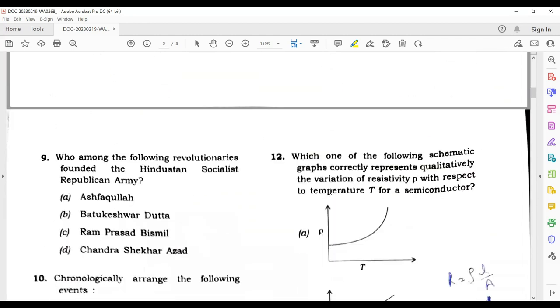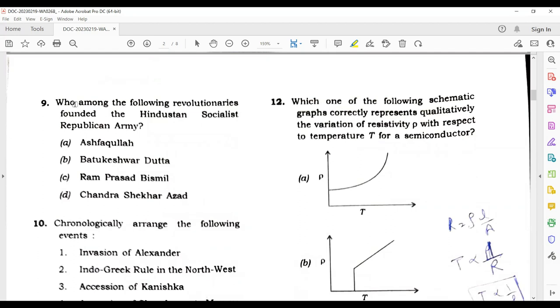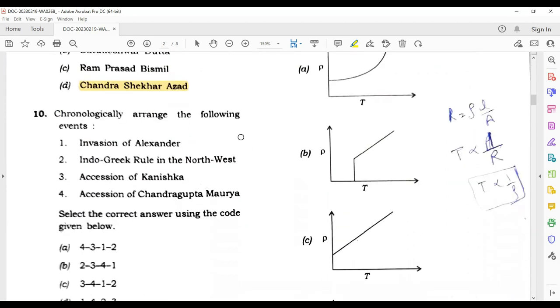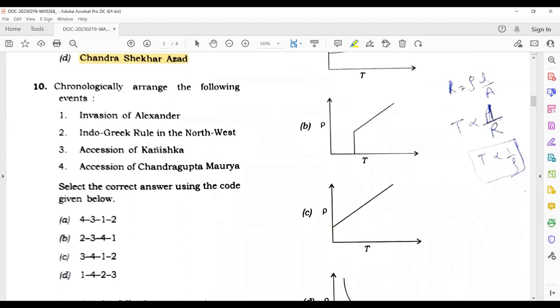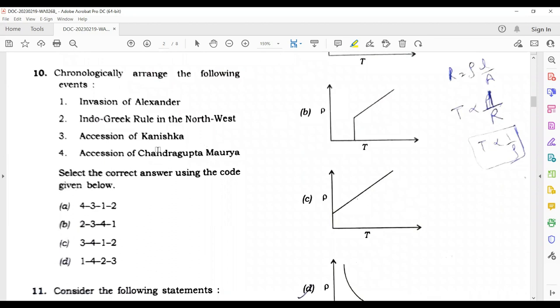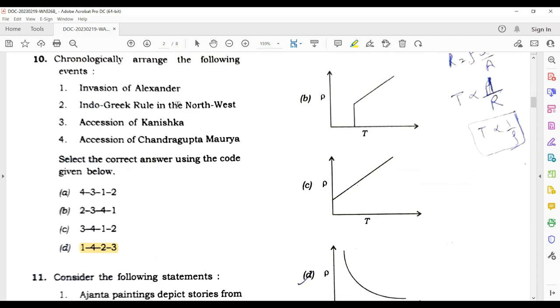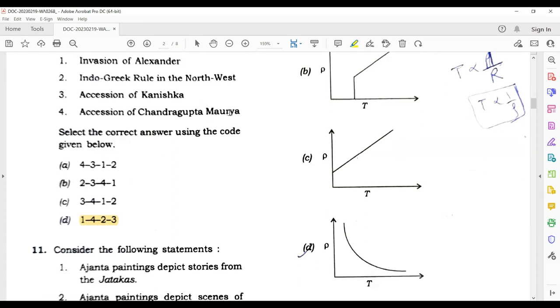Now next question: chronologically arrange the following events. This is a very tricky question again. The correct answer is 1-4-2-3. Alexander came first around 326 BC, then Chandragupta Maurya in 325 BC, then Indo-Greek rule around 180 BC.